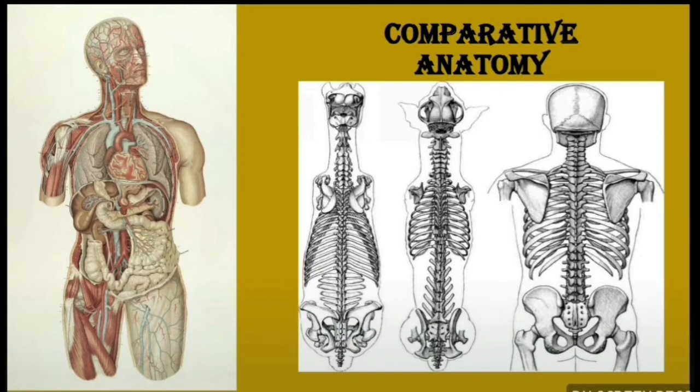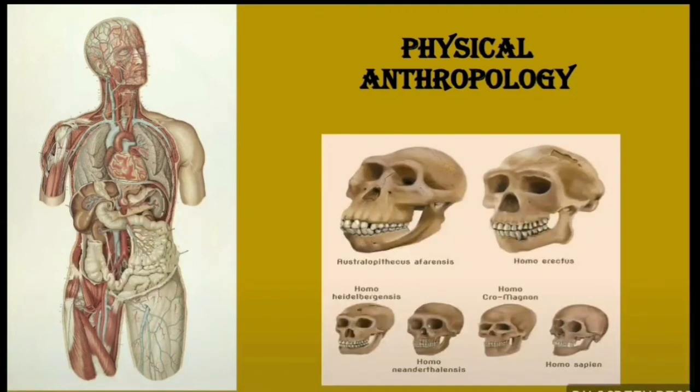Physical anthropology deals with the external features and prehistoric remains of humans. You can see the Australopithecus skull and the Homo erectus skull — there is a significant difference in jaw protrusion and skull shape between them. That is physical anthropology.